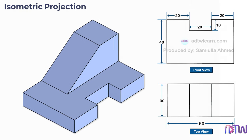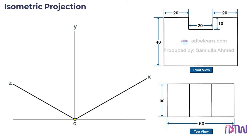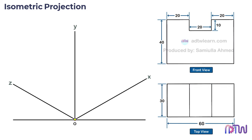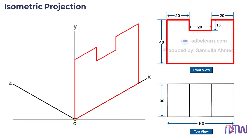Consider the given figure. By looking at these two views you need to imagine the object. When you see this object from the front this is how it looks, and when you see it from the top this is how it looks. We can see this object is symmetrical — that is, the left side of the object is the mirror image of the right side. In this case you can draw the front view on any plane.